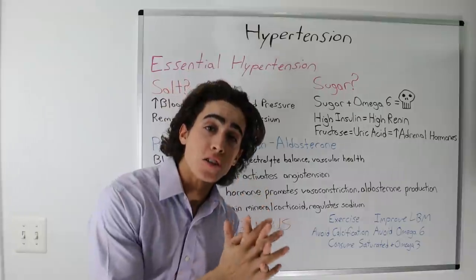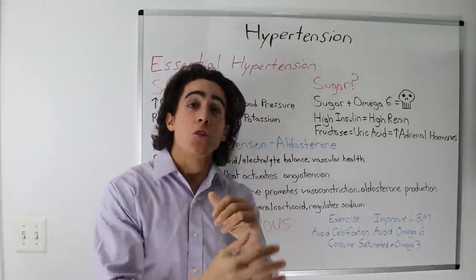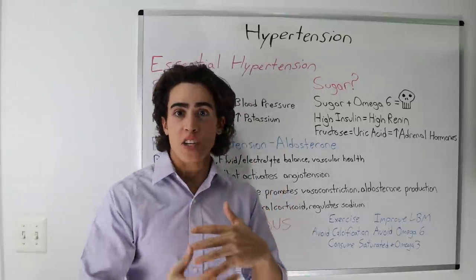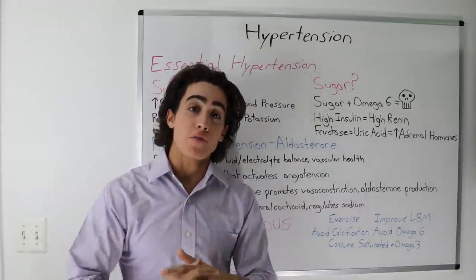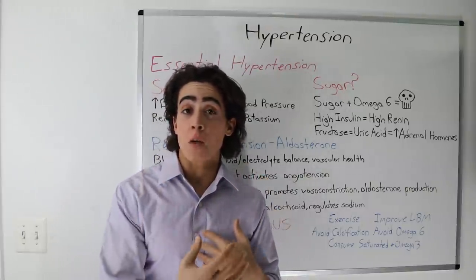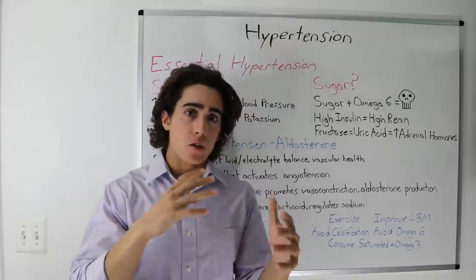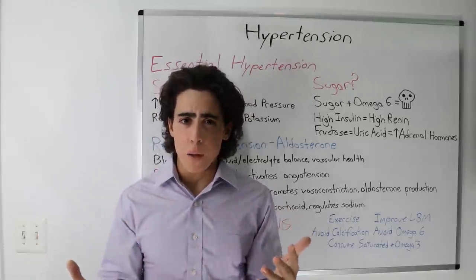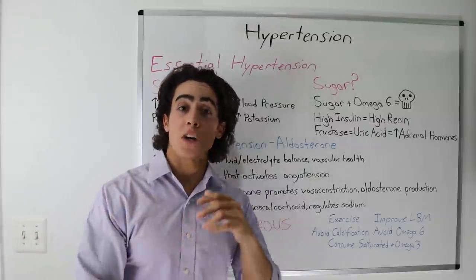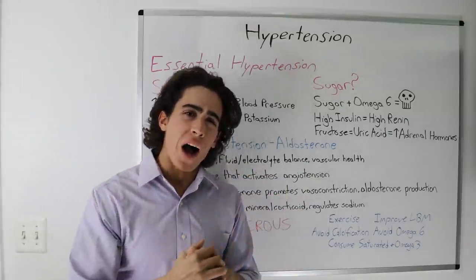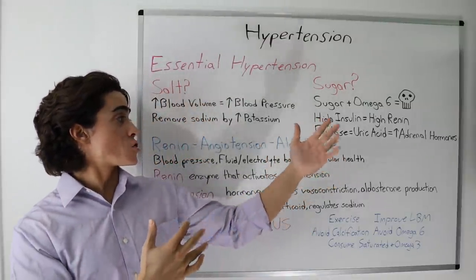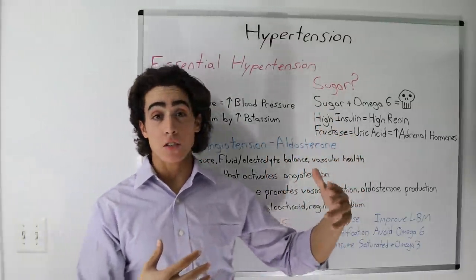The main function of aldosterone is to work on the kidney to increase sodium and water absorption, which can obviously increase blood pressure in too high of an amount. Because if you're absorbing all of this sodium and water, your blood volume increases substantially. Your body is only meant to handle so much blood. High aldosterone also signals the kidneys to excrete too much potassium, possibly why the standard American diet recommends so much potassium.